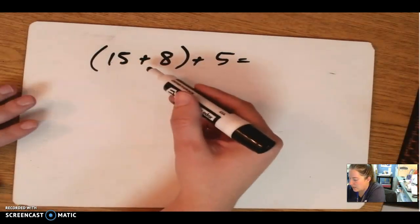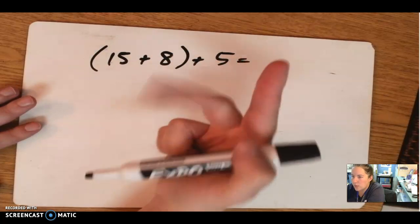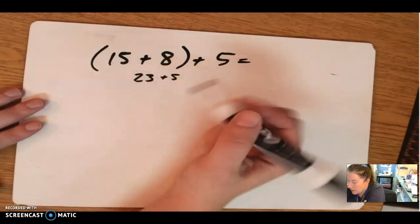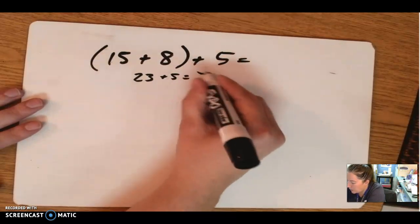So 15, 16, 17, 18, 19, 20, 21, 22, that's 23 plus 5 more, 24, 25, 26, 27, 28, and getting 28.